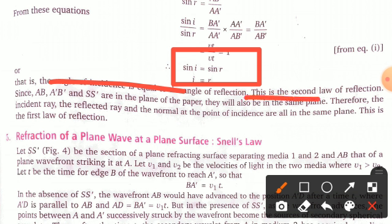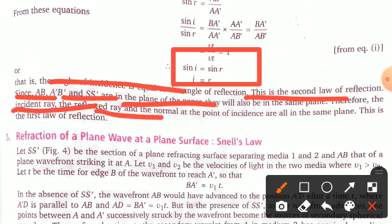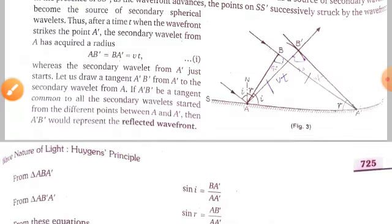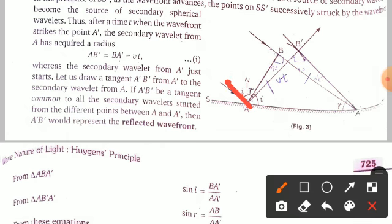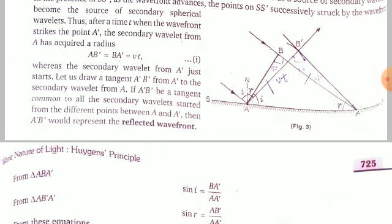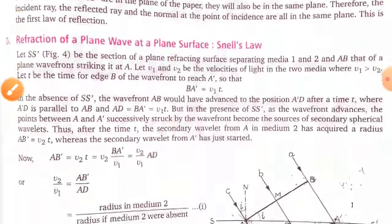Since AB, A'B', and SS' are all in the plane of paper, the incident ray, the reflected ray, and the normal at the point of incidence are all in the same plane. This is the first law of reflection. From the figure, the incident ray, reflected ray, and the normal are all lying on the same plane. Both laws of reflection are thus proved.